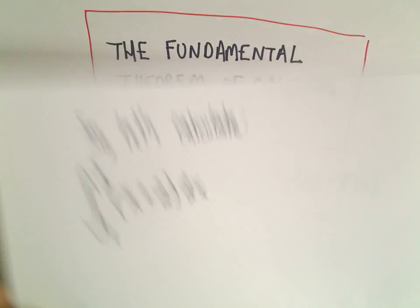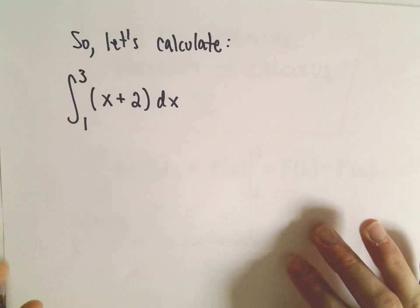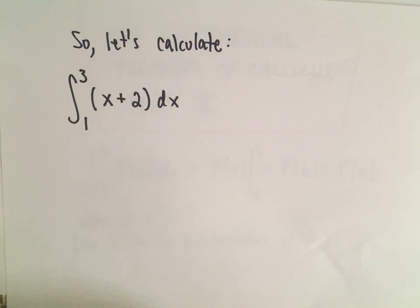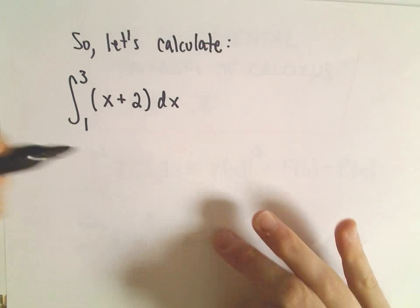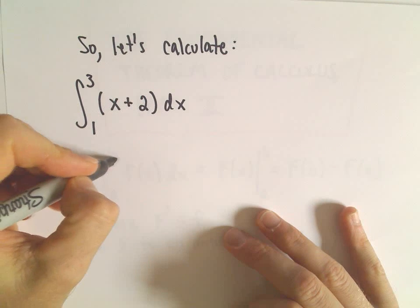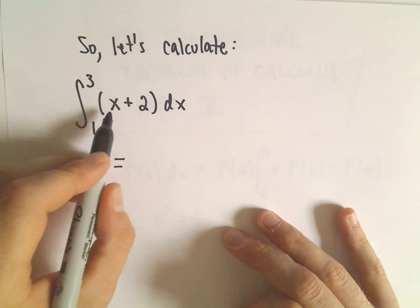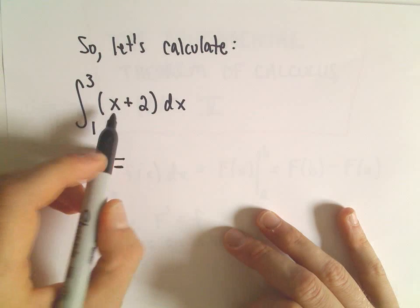So pretty straightforward, now you just have to know antiderivatives. So I've picked one here completely at random, certainly a pretty basic one. So we're going to calculate the definite integral from 1 to 3 of x plus 2.